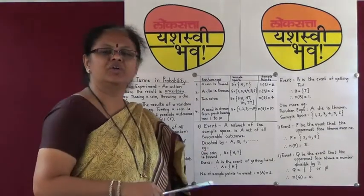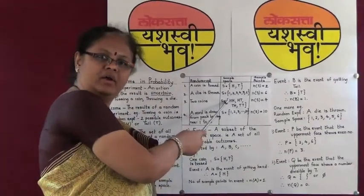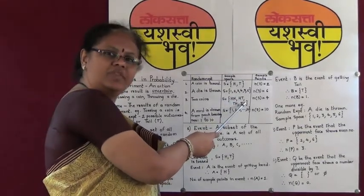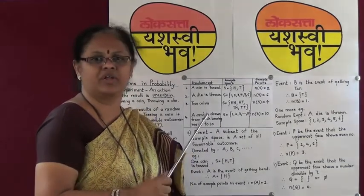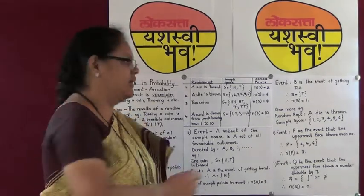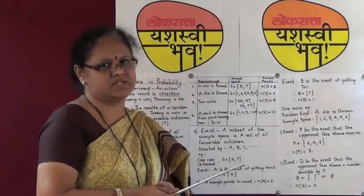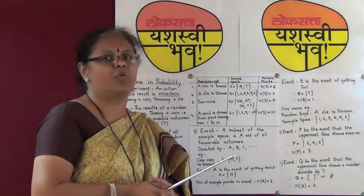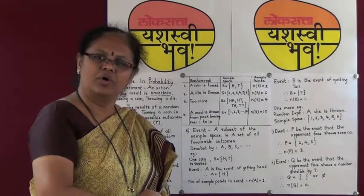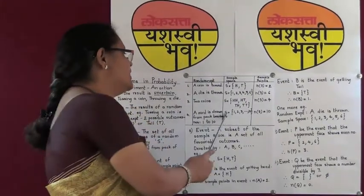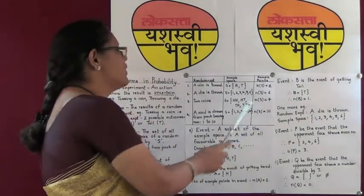We can also toss 2 coins simultaneously. Our sample space would be: head-head, head on the first coin and tail on the second coin, tail on the first coin and head on the second coin, or tail-tail on both coins. The number of sample points would be 4. Another example: we have cards numbered from 1 to 10. The sample space S would contain numbers 1 through 10, and the number of sample points is 10.